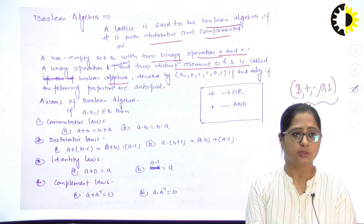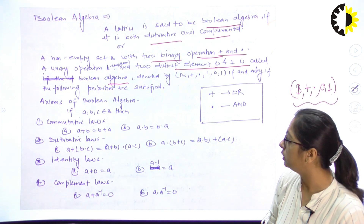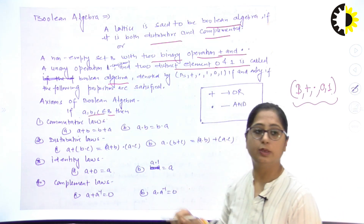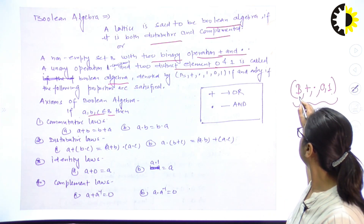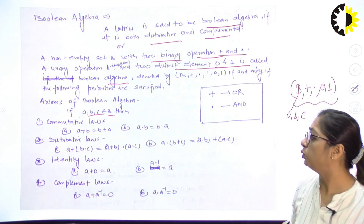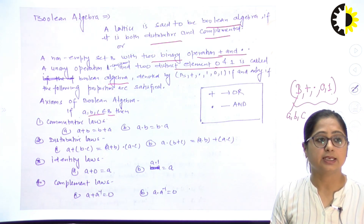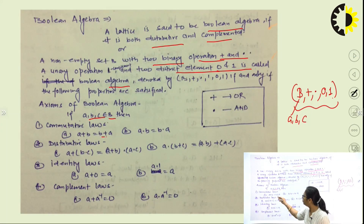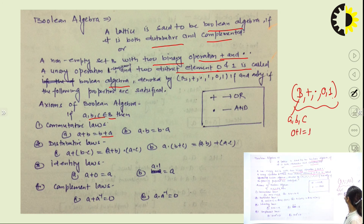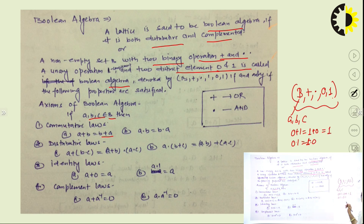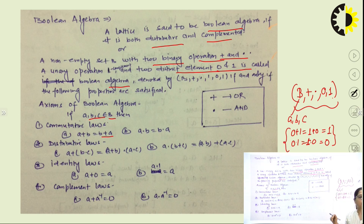For Boolean algebra there are several axioms. If a, b, c belong to Boolean algebra, the first axiom is the commutative law. That means a plus b is equal to b plus a — for example, 0 plus 1 must equal 1 plus 0, and 0 dot 1 must equal 1 dot 0. The value here is 1 and the value here is 0. In both cases this follows the commutative law. So we can say that the first axiom of Boolean algebra states that two variables are commutative in nature.